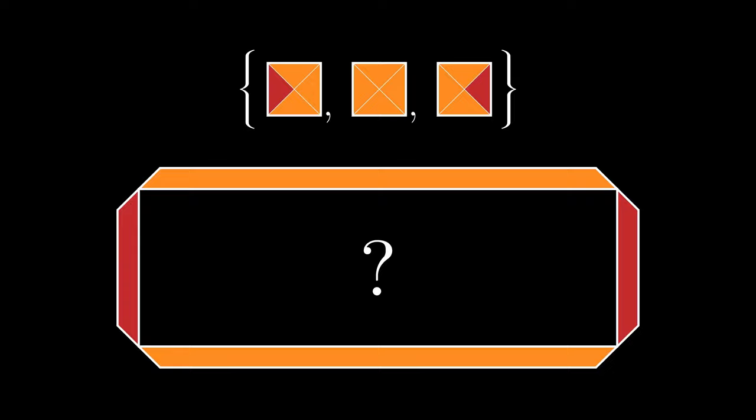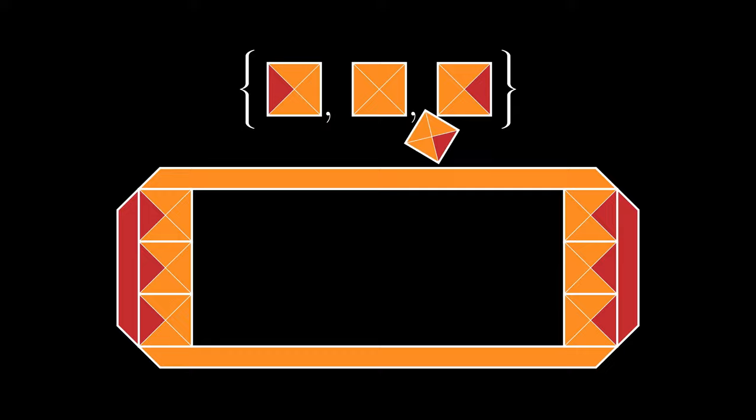Now, say we have the colors of the wall and a finite set of tile types. The question is, can we create a tiling that satisfies our requirements? Note that we can use as many tiles of each type as we want, but we cannot rotate them.